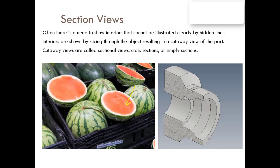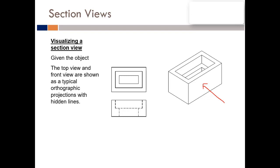Similar to an object viewed from the outside, you cannot see the internal details. For example, there is a reduced diameter — this diameter is smaller than the other. By cutting the part and adding a section view, you can see exactly the dimensions and apply dimensions to the part.